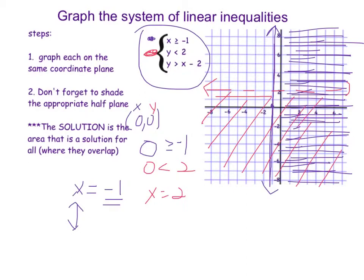Now if that was the last equation, where they overlap right here would be the solution. But we have one more equation, this one right here. y is greater than x minus 2. And I believe this was the same one from yesterday. So we start at negative 2, and we go up 1, over 1, up 1, over 1, down 1, back 1, down 1, back 1.